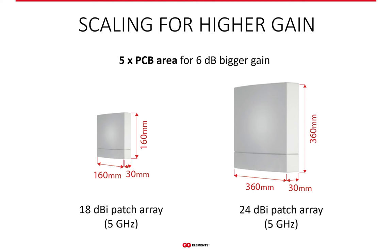Thanks to well-developed PCB manufacturing technology, scaling patch array antennas for higher gain is neither very difficult nor expensive. The surface area will increase, but the thickness — around 30 mm in this example — remains the same. The added expense corresponds only to additional PCB manufacturing cost, which is one of the biggest advantages of patch array antennas. For example, to scale from 18 to 24 dBi gain, all you need is to increase the antenna area five times, plus a slightly larger enclosure that adds little to the final cost.